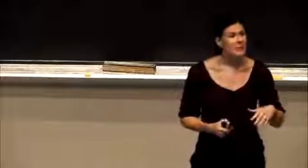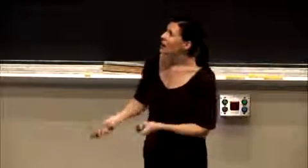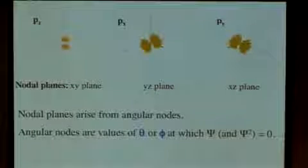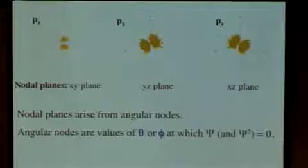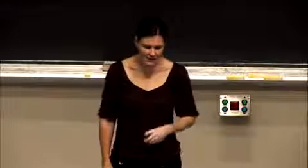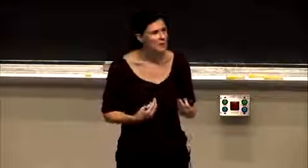You remember from last time, radial nodes are values of r at which the wave function and wave function squared are zero. The difference is now we're just talking about the angular part of the wave function. In fact, these are the only two types of nodes that we're going to be describing.